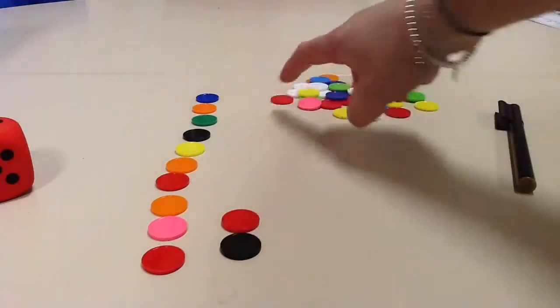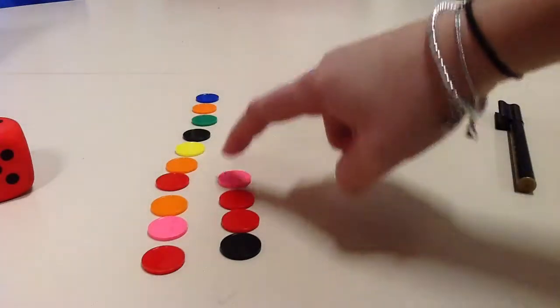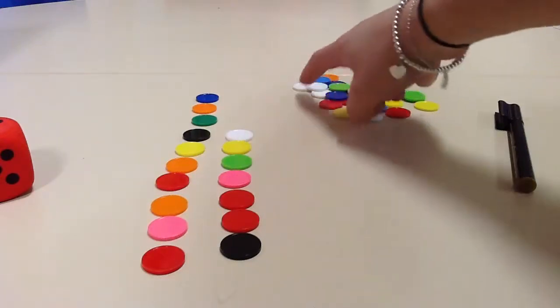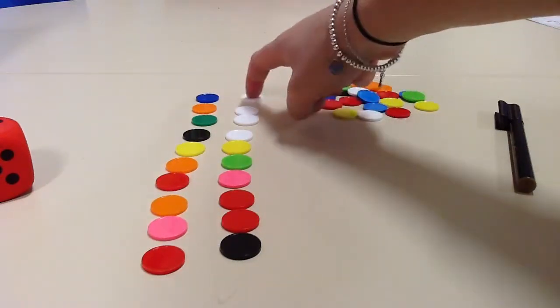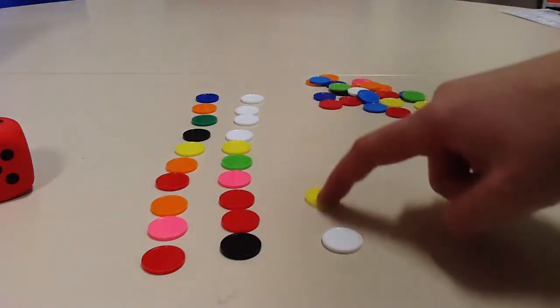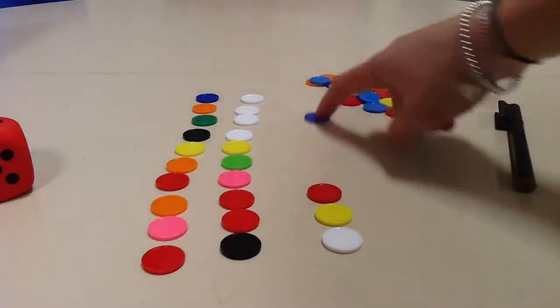1, 2, 3, 4, 5, 6, 7, 8, 9, 10. That's two groups of ten.